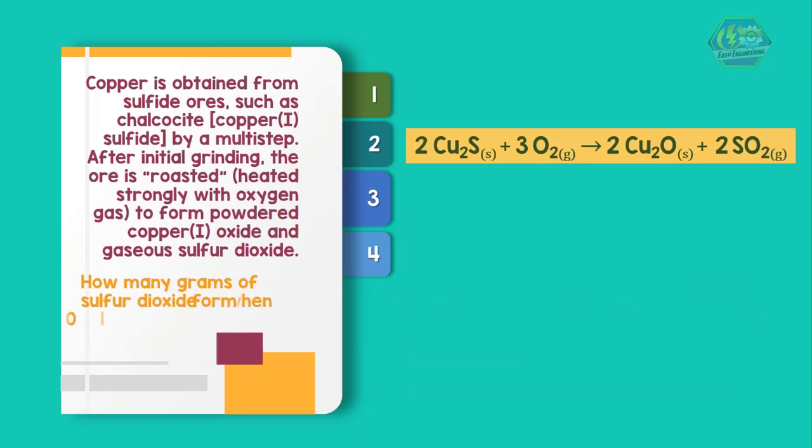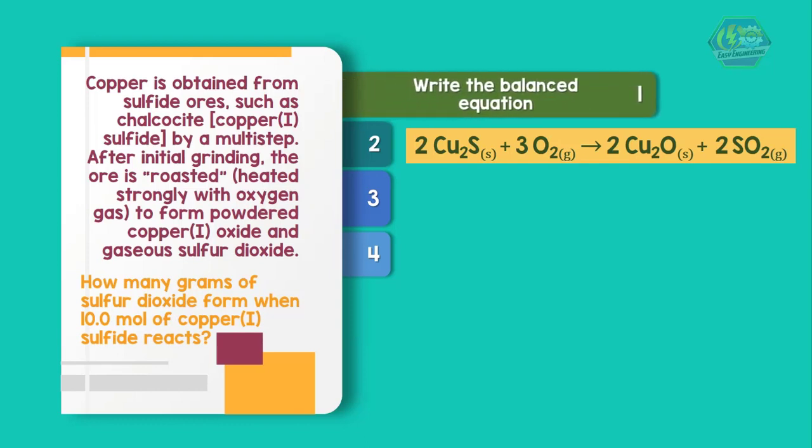We have 15 moles O2 needed to roast 10 moles of copper sulfide. For an additional question: during the process, how many grams of sulfur dioxide form when 10 moles of copper sulfide reacts? First, recall the balance equation: 2Cu2S + 3O2 → 2Cu2O + 2SO2.